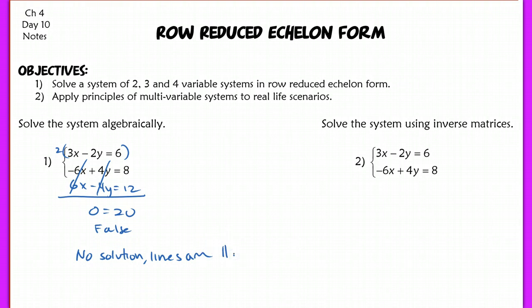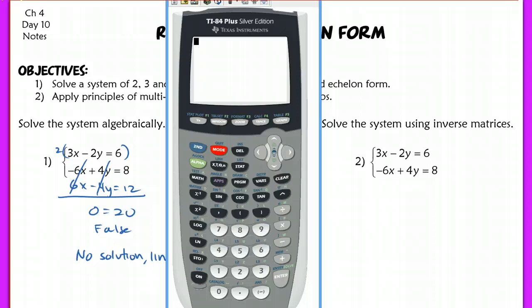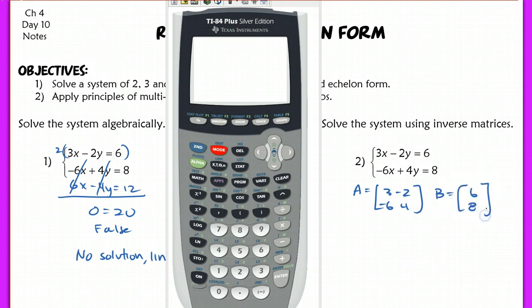Now I'm going to do the same exact system using inverse matrices, what we did yesterday using our calculator. I went ahead and put that into my calculator. In my calculator, I have matrix A listed as 3, negative 2, negative 6, and 4, and matrix B is listed as 6 and 8.